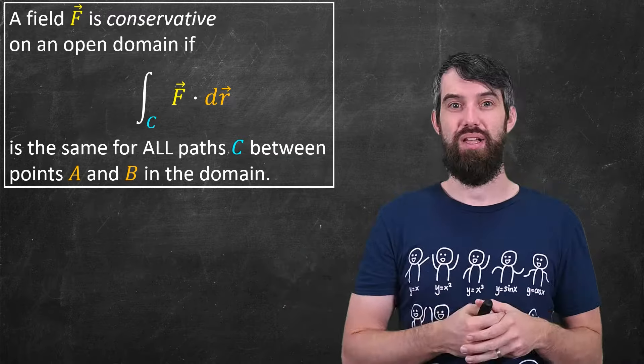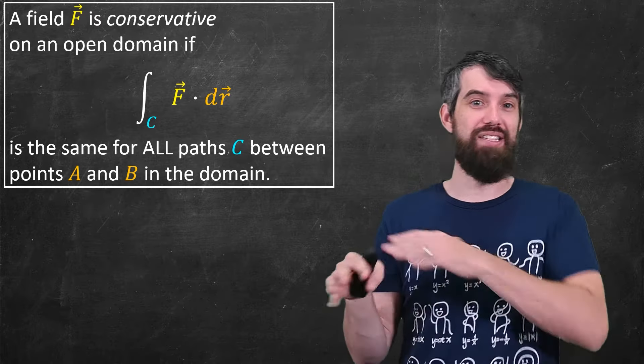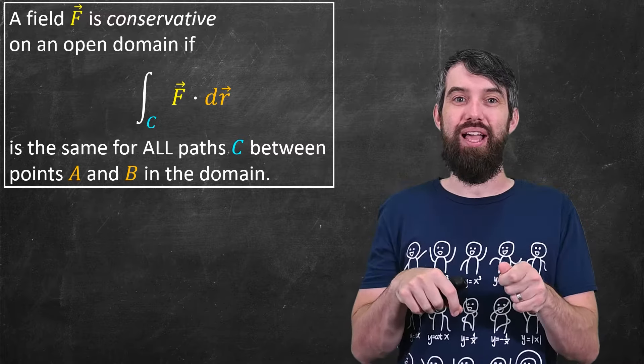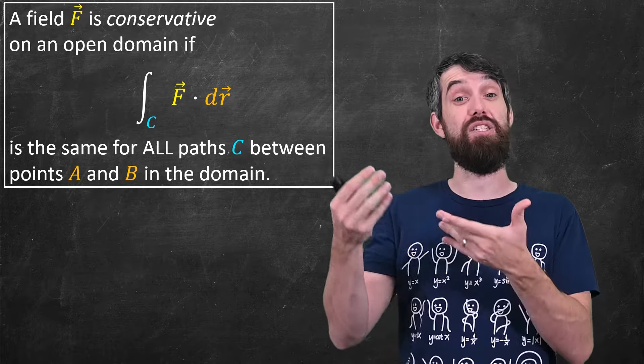Not all fields are conservative. For example, if I imagine paddling on a body of water, and the water has some sort of velocity field in it, then the path that I take as I paddle, it's going to affect this line integral, which we've previously interpreted as flow.